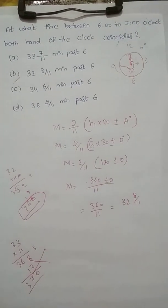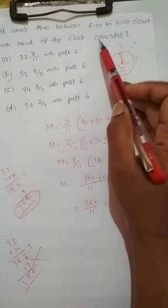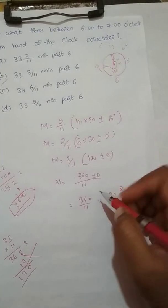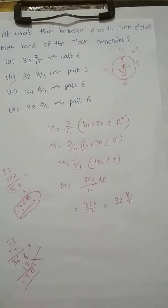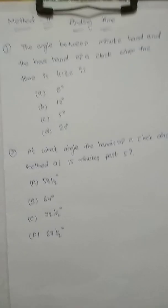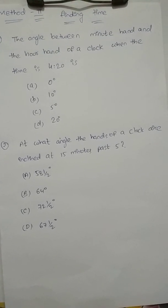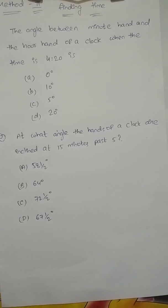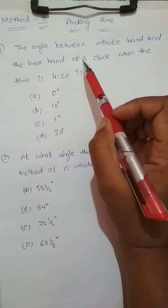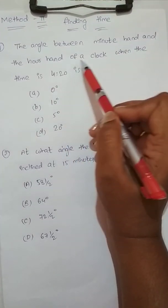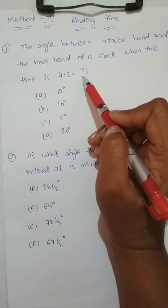Method 2 is to calculate the angle from a given time. So when time is given, we find the angle. Both methods use the same formula: M = 2/11 × H1 × 30 ± A degrees. First question: find the angle between the minute and hour hand of a clock when the time is 4:20.